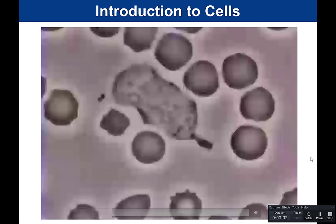In the video, we saw a white blood cell chasing a bacterium. Throughout this unit, we'll learn how these cells do different things — how the white blood cell was able to move, how it knew where the bacteria was, why it engulfed the bacteria through phagocytosis, and how it recognized bacteria as foreign while recognizing red blood cells as self.